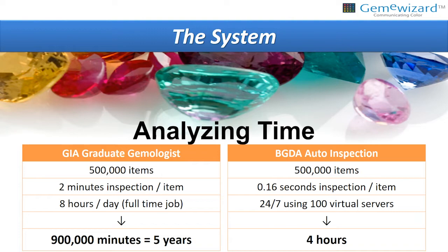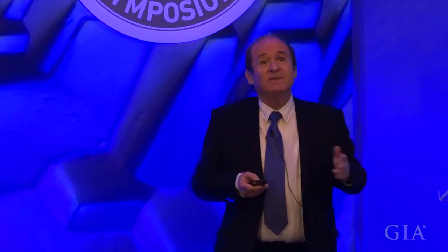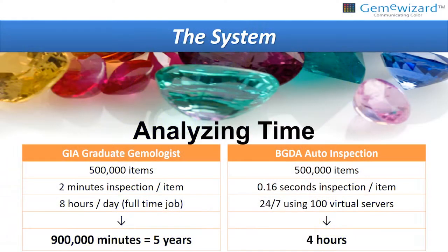Just to give you an example about the speed — we did a project with half a million items. It would have taken a gemologist at least two minutes to look at each stone and say whether it is logical or not. Two minutes each: 900,000 minutes — that is five years' work. Our system does it within four hours. With 10 servers, and now we have 20 servers, today it takes two hours to do half a million analyses of images and all related information.